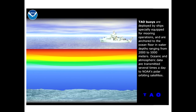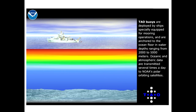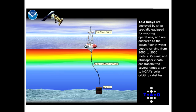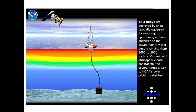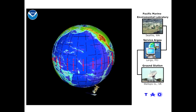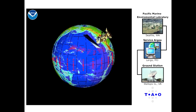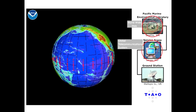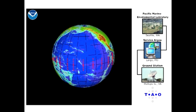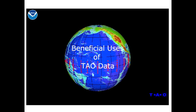TAO buoys are deployed by ships and are anchored to the ocean floor. Instruments on the buoys monitor weather and ocean data, which are transmitted several times a day to NOAA's polar orbiting satellites. The buoy data is relayed from the satellite to shore, where it is made available through the web and transmitted via the global telecommunications system to meteorological centers worldwide.